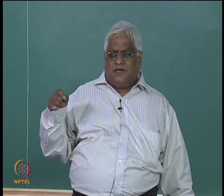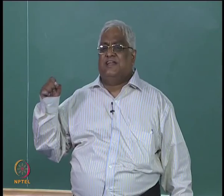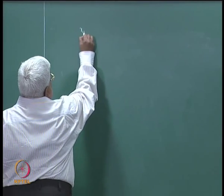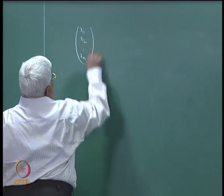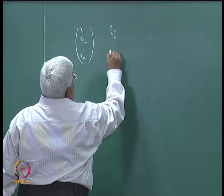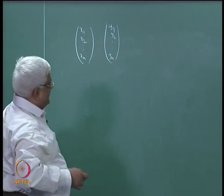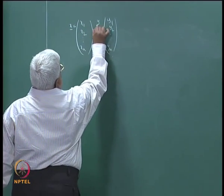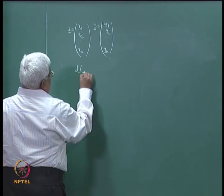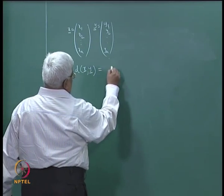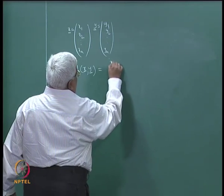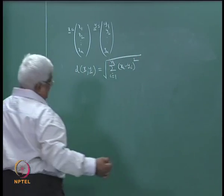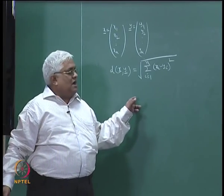Suppose you have two vectors (x1, x2, ..., xn) and (y1, y2, ..., yn). The Euclidean distance between these two vectors x and y equals the square root of summation from i equals 1 to n of (x_i minus y_i) whole squared. This is the Euclidean distance which all of us know.